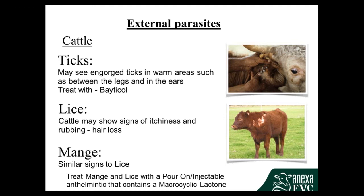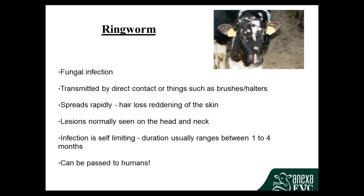Cattle can also get mange, which has similar signs to lice and is treated the same way. Now ringworm — this can be quite common in young stock. Just like in humans it's a fungal infection. You get quite distinct round areas of hair loss that can be slightly raised and reddened. It spreads easily through mobs and will also spread to humans, with lesions normally around the head and neck. Despite lots of old wives' remedies, basically none of them work — you've just got to let the infection run its course, as it's self-limiting and fixes itself after about one to four months.